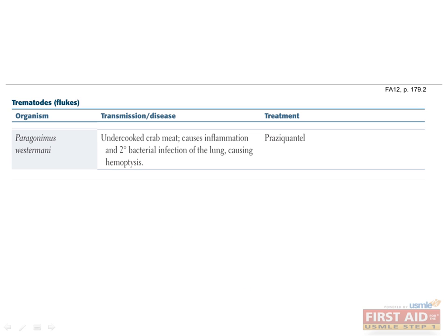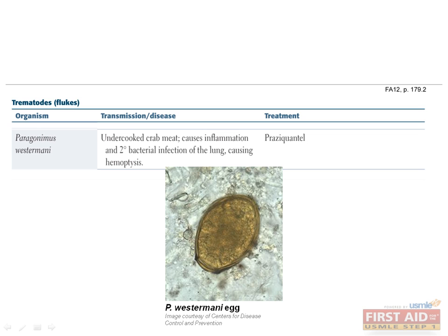The last worm is Paragonimus westermani, which is endemic to Asia, Africa, and South America. Eggs are ingested from infected shellfish. Symptoms of infection include hemoptysis, fever, and cough. Remember the buzzword association between hemoptysis and Paragonimus westermani.